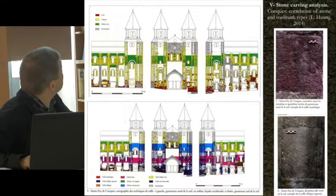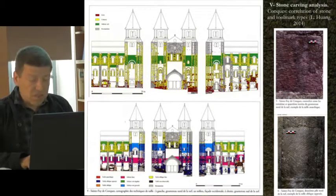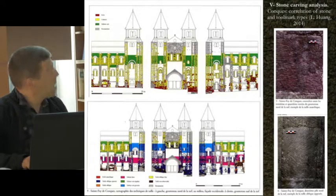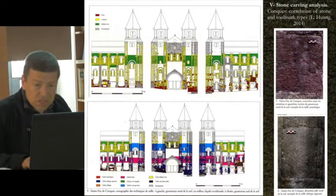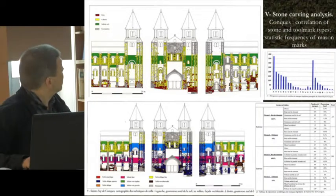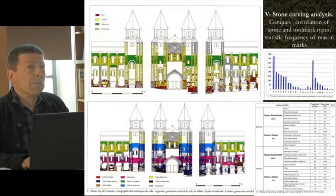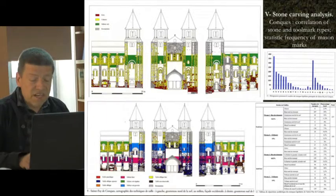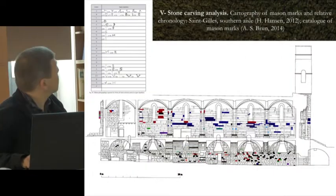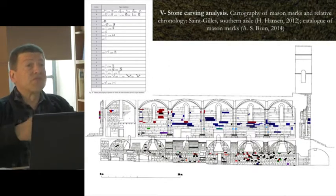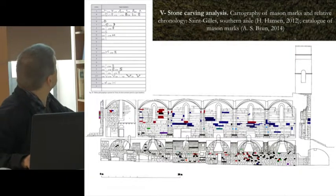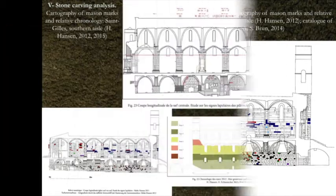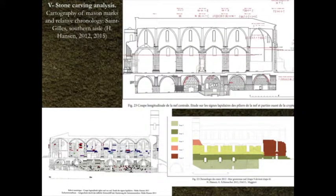Here a correlation of the geological and the stone surface analysis of the same elevations shows that certain types of stone are worked with certain tools, and the masonry characteristics are used as one of the major analytical facts, also with statistics of mason marks and size of stones. Mason marks cartography is one of the main clues for stratigraphy and a general analysis of the building process — at Saint-Gilles, the different colors show the progress by horizontal layers and this translates to a chronological seriation of the building process.